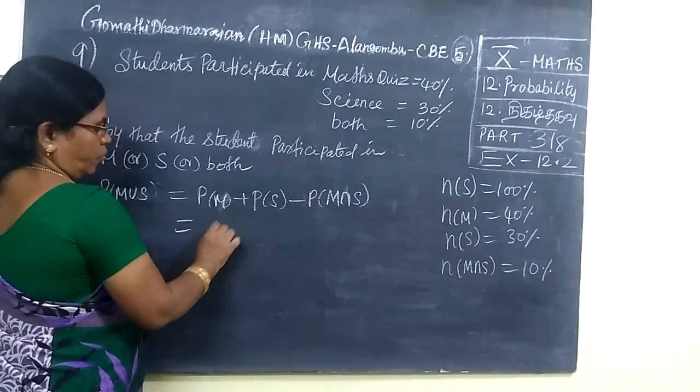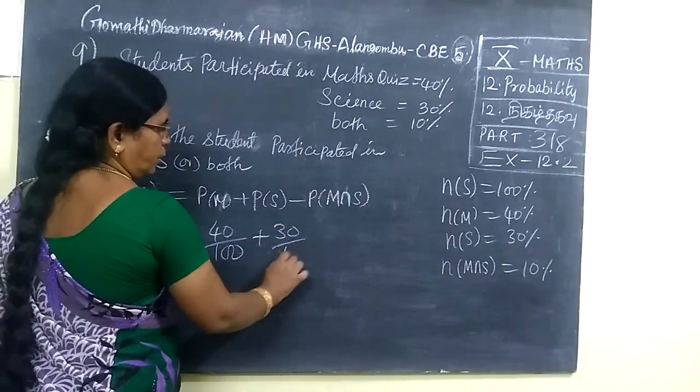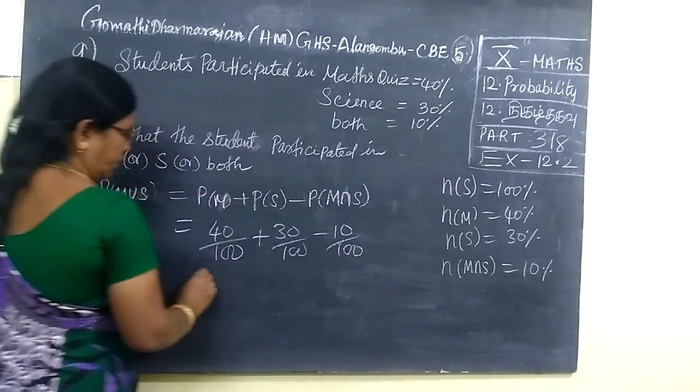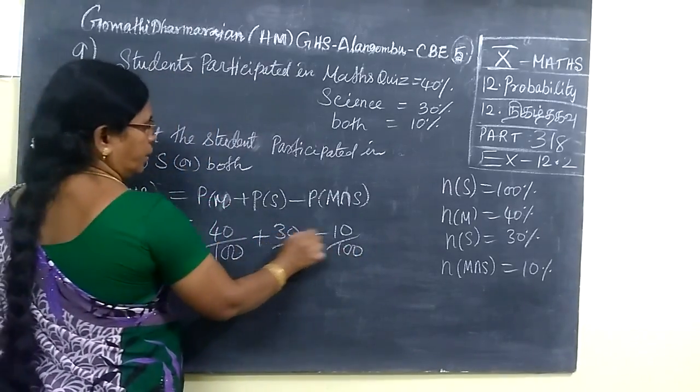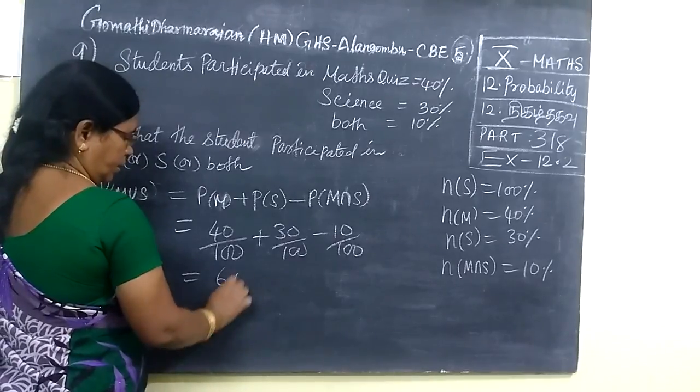So 40, percentage means by 100, then 30 by 100 minus 10 by 100. So 70 minus 10, 60 by 100.